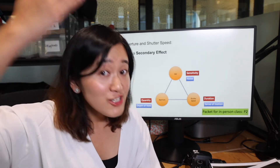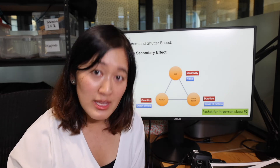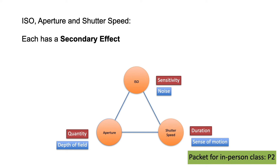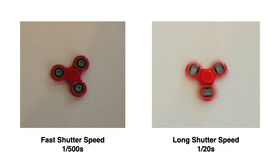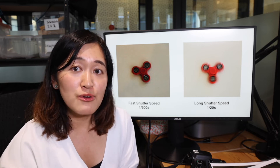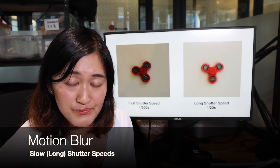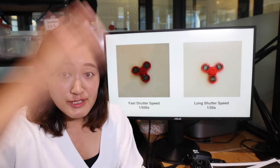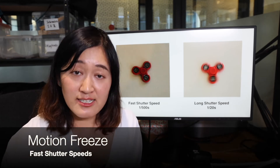For shutter speed, a longer or slower shutter speed lets in more light and your picture is brighter, while a faster shutter speed cuts off light and makes your picture darker. But at the same time, you are changing the sense of motion. The picture shot with a fast shutter speed of 1/500 of a second freezes motion, whereas the picture shot with a longer shutter speed of 1/20 of a second creates motion blur. Every time you make the shutter speed longer, you let in more light but create motion blur; every time you increase it, you cut off light and freeze the motion. This is the secondary effect of shutter speed.